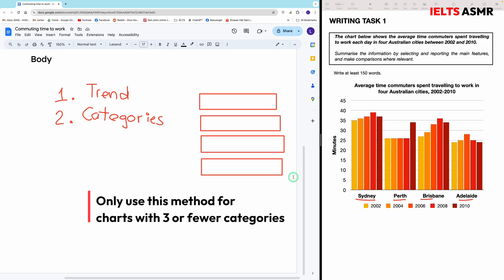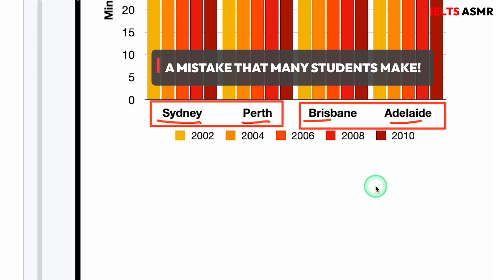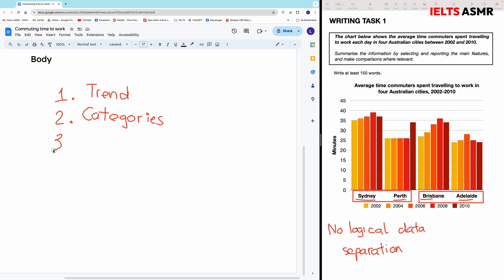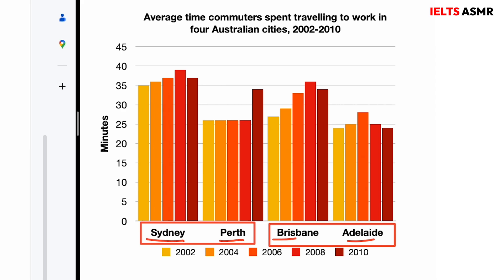I rarely write a report containing four body paragraphs. Most students simply divide categories into two and randomly put two cities in body 1 and two remaining cities in body 2. This seems straightforward, but if you separate data this way, you're not showing any logic behind your grouping. You need to show a logical reason for your data separation — randomly dividing is no better than writing just one body paragraph. This leaves us the third method: separating by highest starting points. This is very useful for charts where categories behave in the same pattern. I'll put the two cities with the highest starting values in 2002 — Sydney and Brisbane — in body 1, and Perth and Adelaide in body 2.